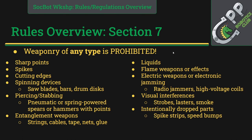Section 7 is Weapons and Hazards — definitely one to read. We can't have any weapons because they endanger the technology and the people involved. Prohibited items include anything with sharp points, spikes, or cutting edges — if it could cut an open hand, you'll need to sand it down. Spinning devices like saw blades, bars, and drum discs are prohibited as they could be dangerous. Anything that pierces or stabs, pneumatic or spring-powered hammers meant to do damage — none of those are allowed.